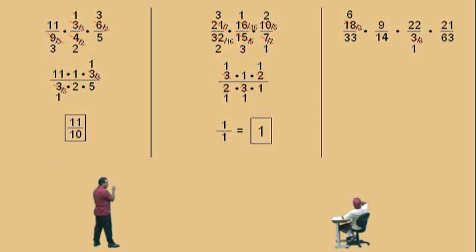Now notice, we have a 9 and a 63. Those are both divisible by 9. What's 9 divided by 9, Charlie? 7? And 63 divided by 9? There we go.